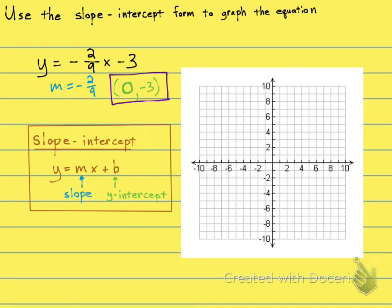This is going to be your starting point. So we know our line is going to cross the graph right here at 0, negative 3. Now from that point, we're going to use our rise over run.